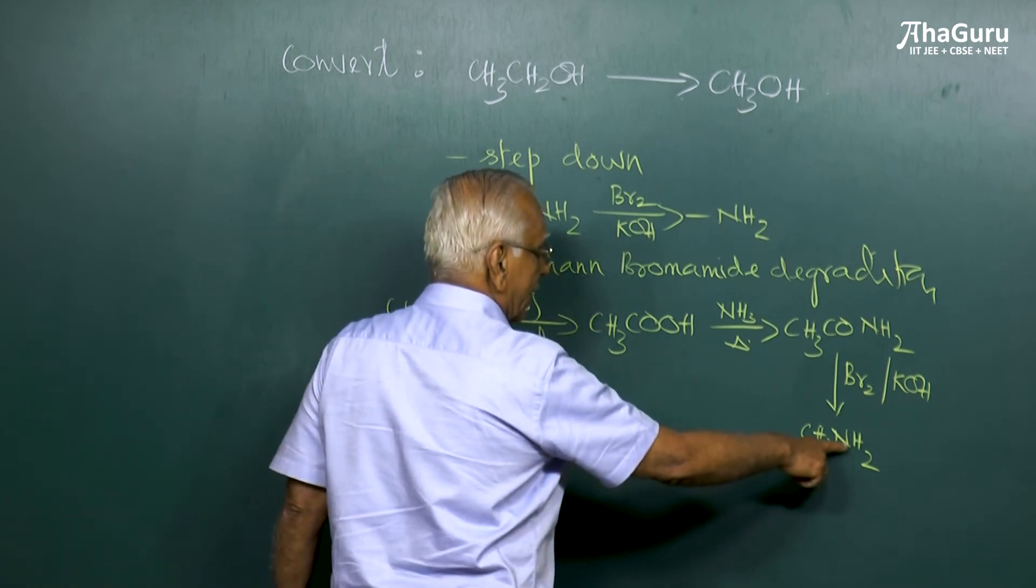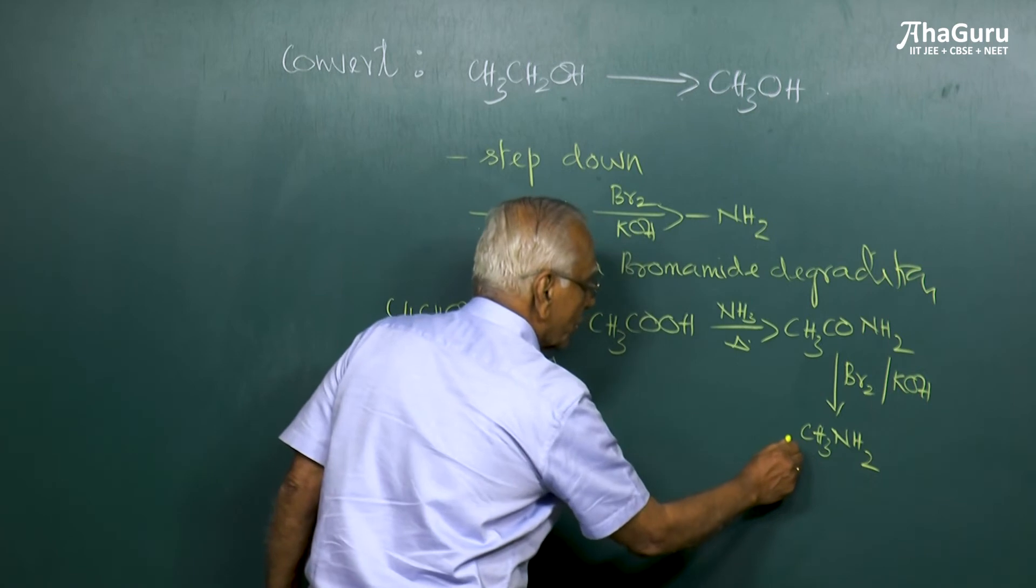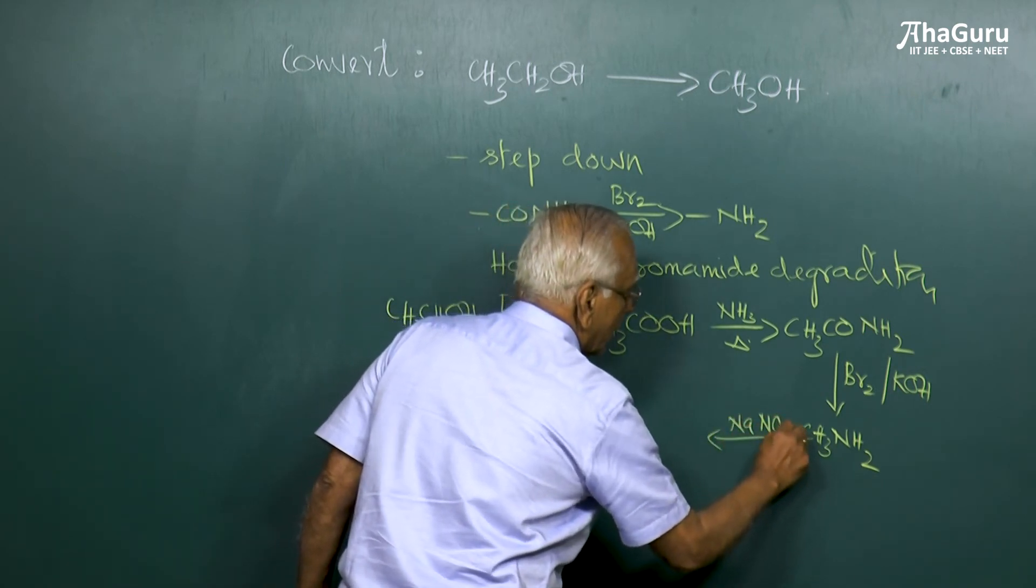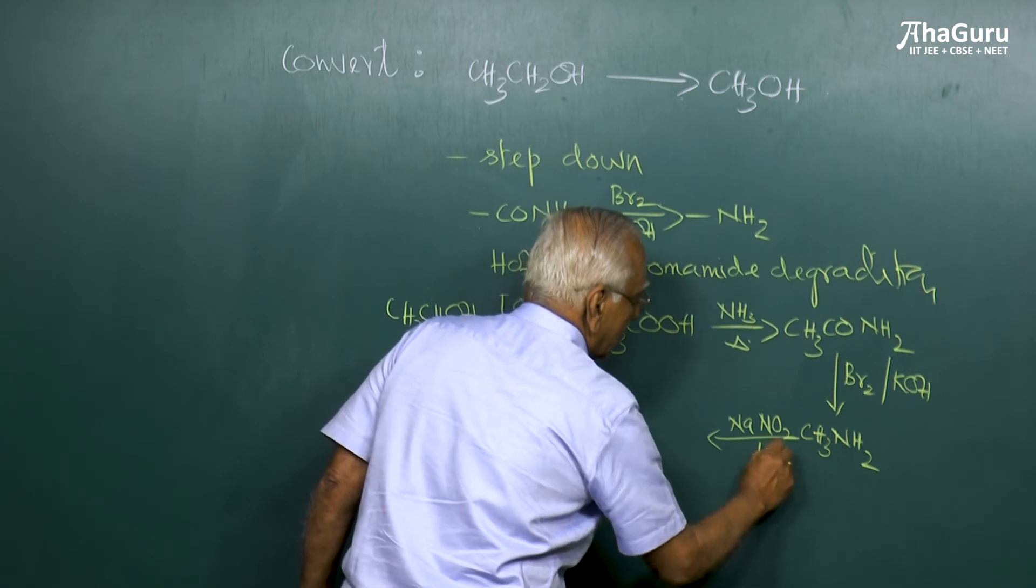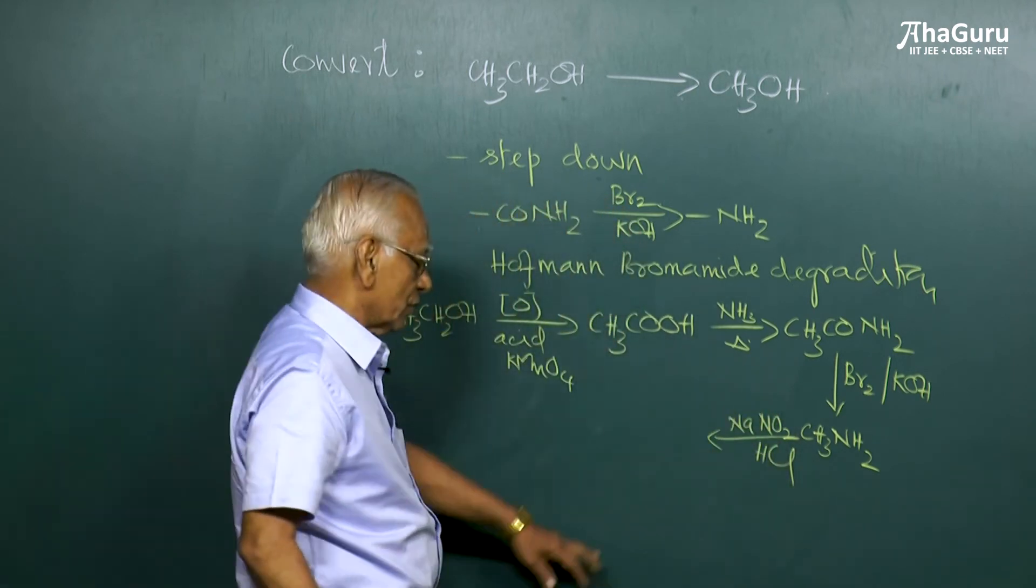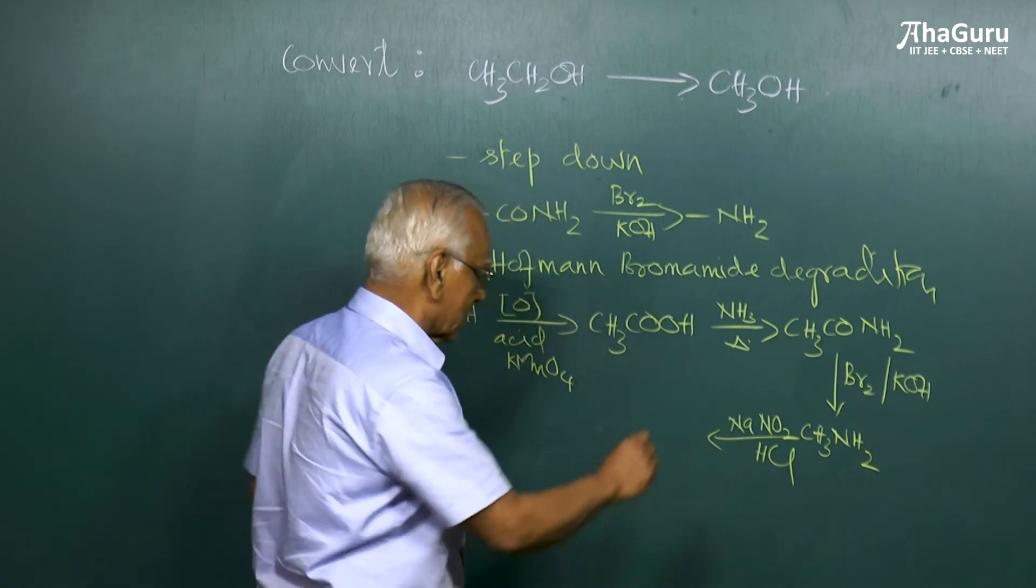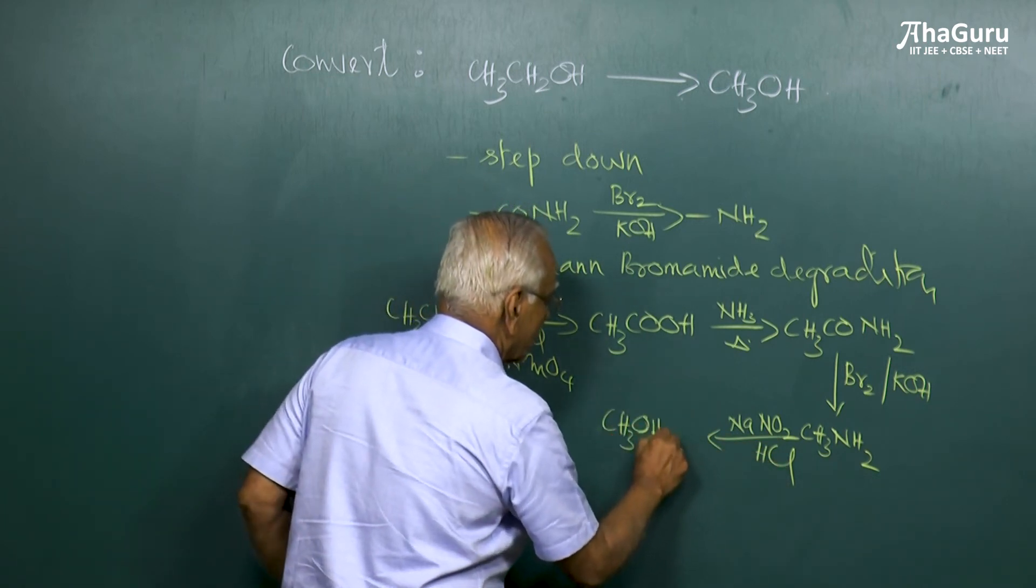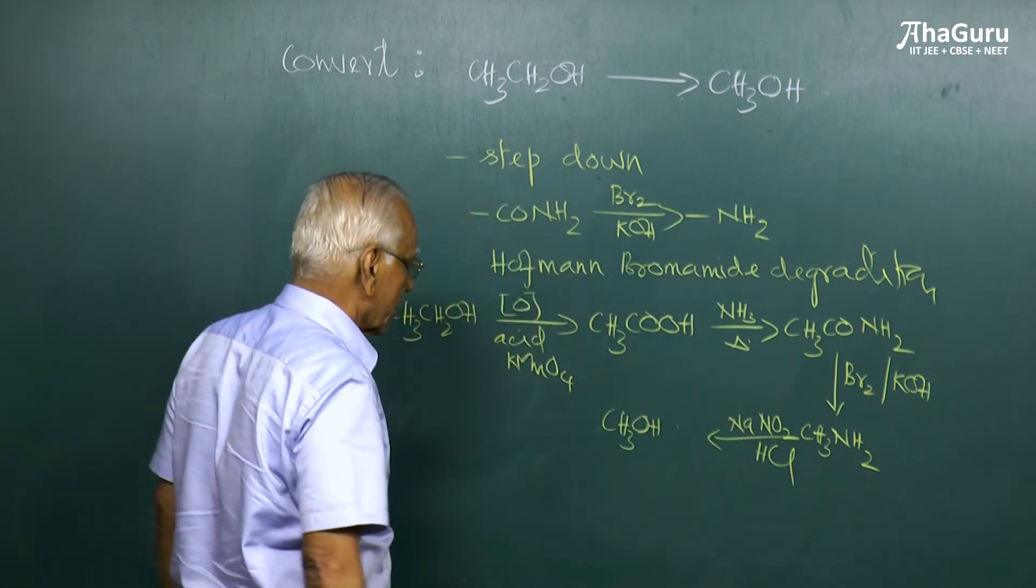And finally we know how to convert NH2 to OH group. You add NaNO2 and HCl. HNO2 is unstable, therefore you have to take a mixture of NaNO2 and HCl wherein NH2 is converted into OH group.